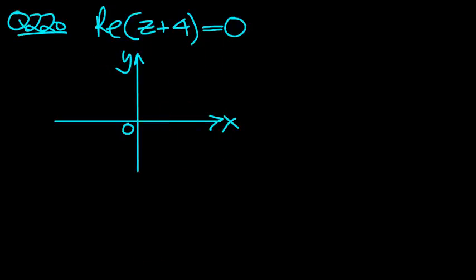RE of Z plus 4 equals 4. Let's have a look at this one. First, the thing in the bracket. Z equals X plus IY, so that will simplify to X plus 4 plus IY equals 0.